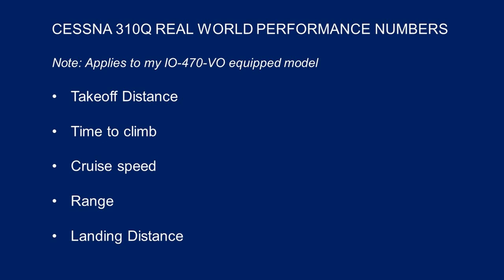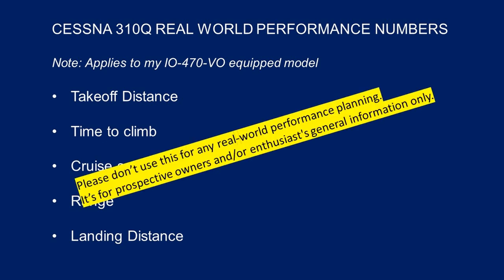I'm going to address the following areas: takeoff distance, climb performance — which is really time to climb — cruise speed, real-world cruise speed what I really see, my range and endurance, and also landing distance. Just a quick word: don't use this for any real-world performance planning. You need to refer to your POH if you're an owner or pilot of a 310Q. This is really just for entertainment for prospective owners and enthusiasts — general information only.